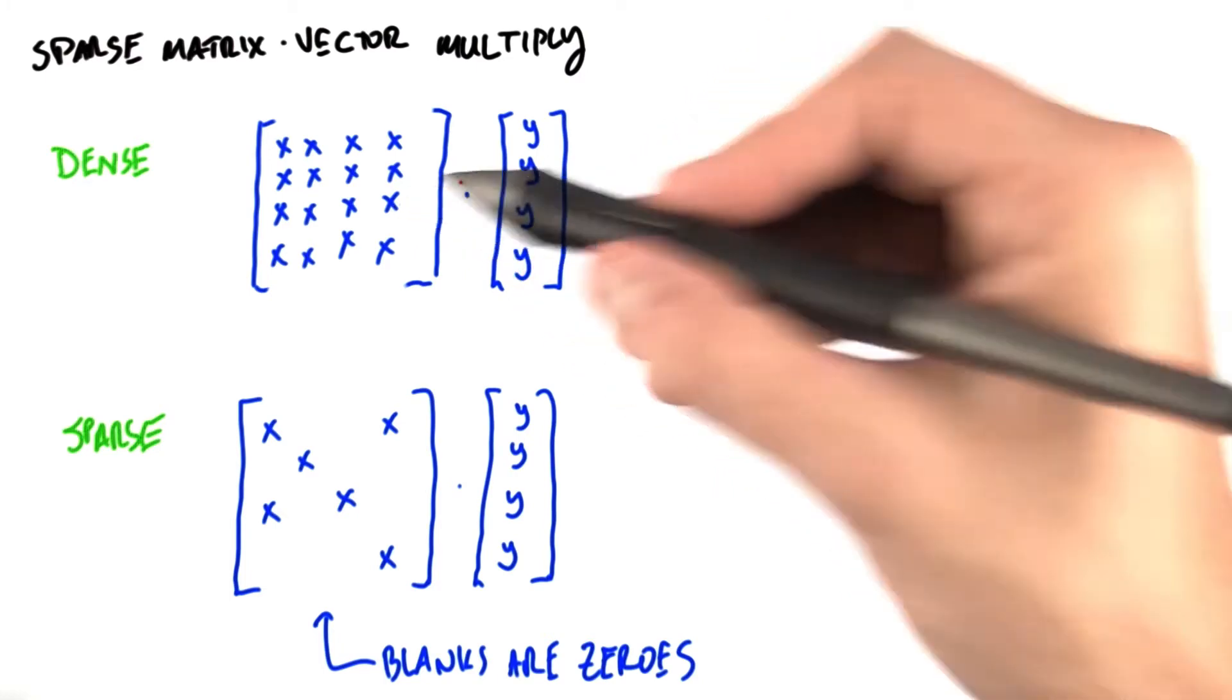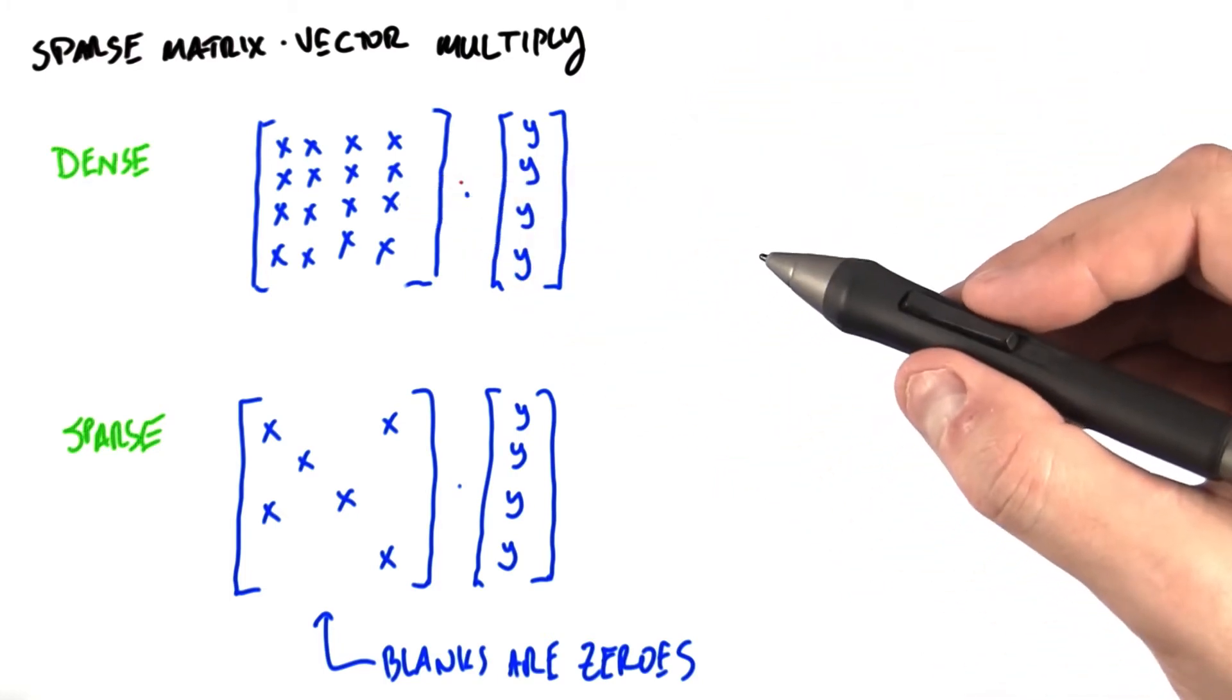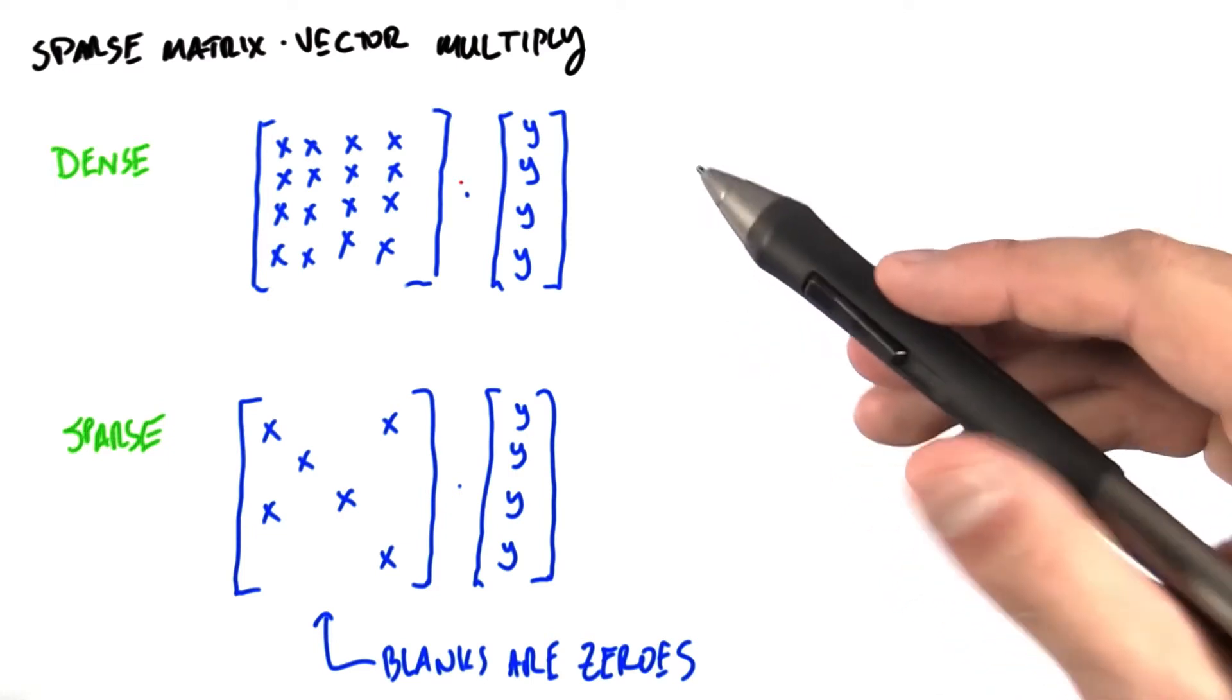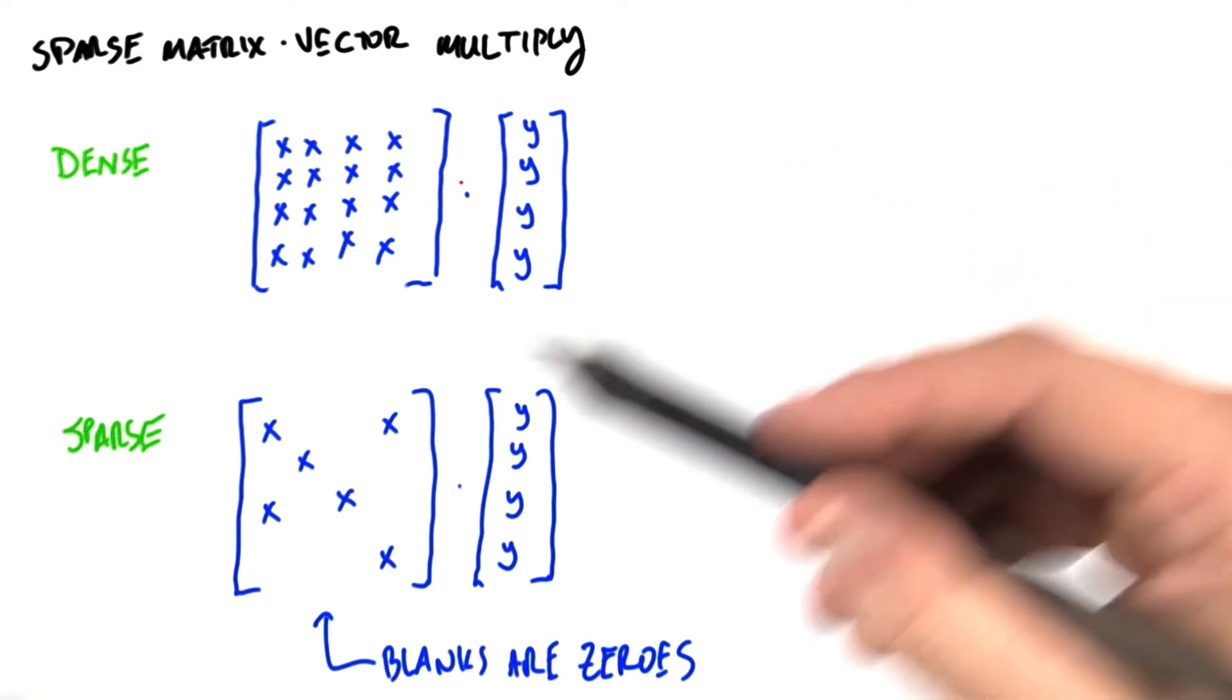If this matrix is dense, where every entry in the entire matrix is represented in the matrix data structure, GPUs can get excellent performance. But many interesting matrices are what we call sparse.